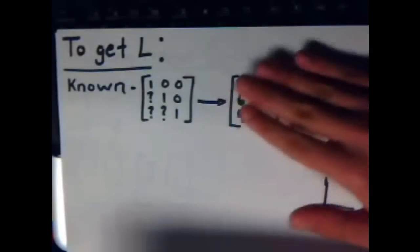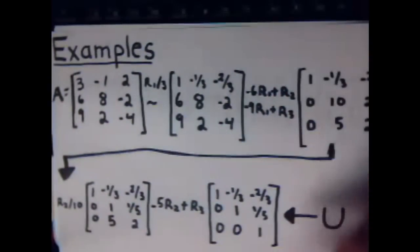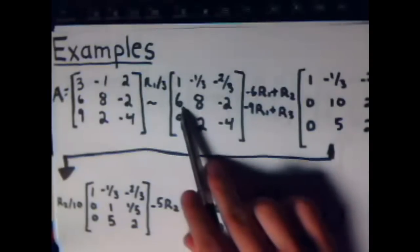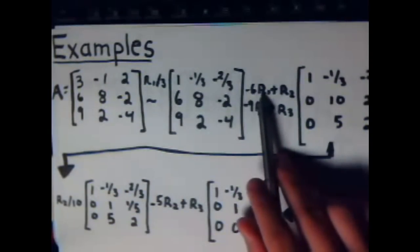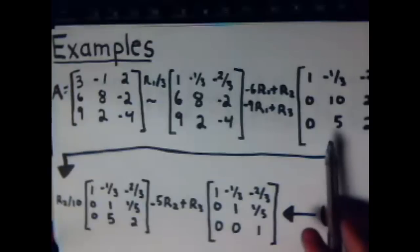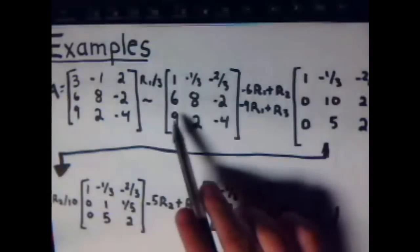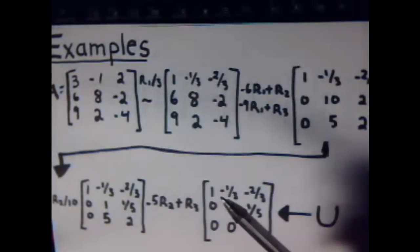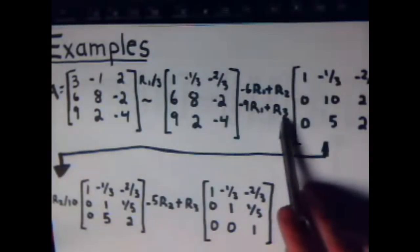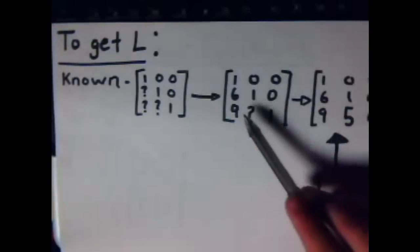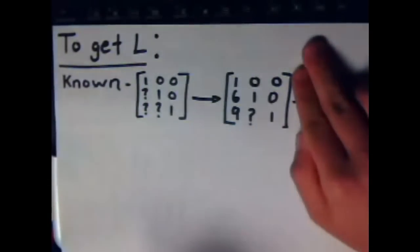So first we want to think, what did we do to get rid of the number that was originally there? Well, if we look back here, when we eliminated this 6, which is in that mystery spot, we multiplied row 1 times negative 6 plus row 2. And also, I might as well do it because we did it in the same kind of step. What did we do here? That's another one of those that we weren't sure about in L. This one we did negative 9 times row 1 plus row 3. Well, as it comes out to be, those are two of the mystery numbers that are there, 6 and 9.